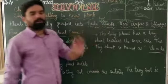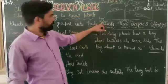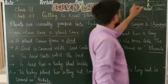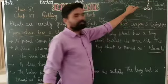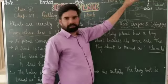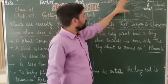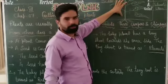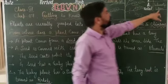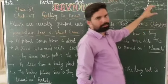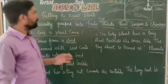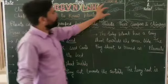Root system में only roots होती हैं। Shoot system में branches, leaves, stem, flowers, fruits etc. होते हैं। So except the roots, जो भी होता है वो सब shoot system में आता है। Stem plant का main part है।